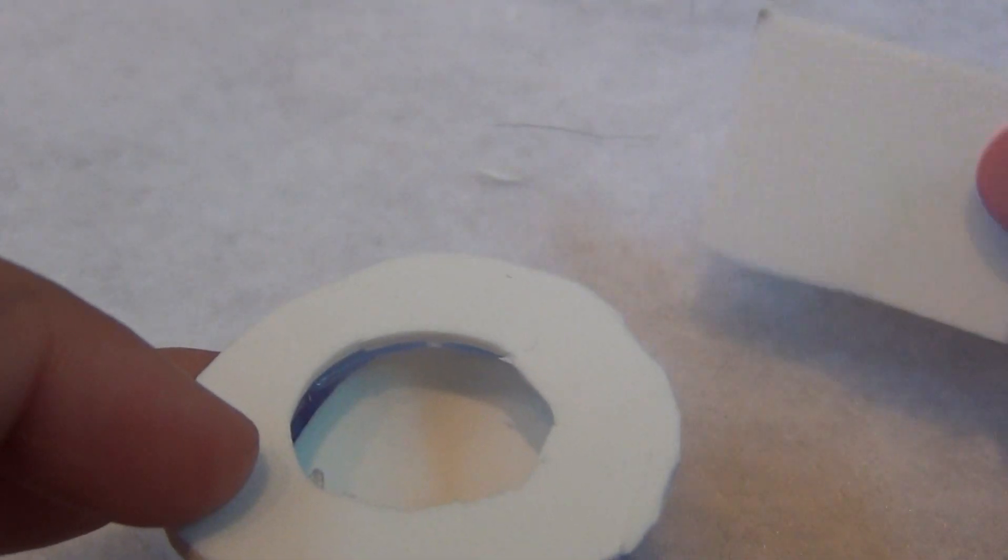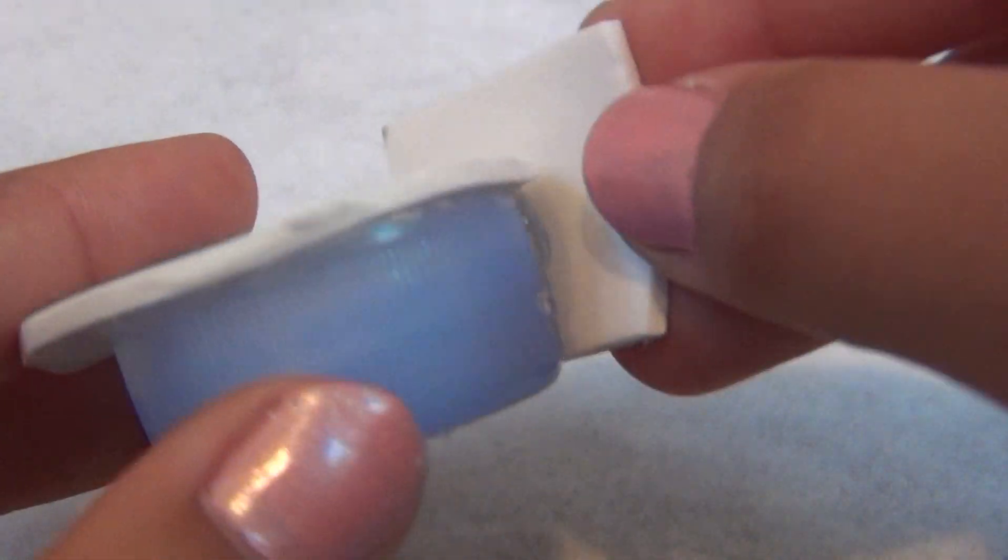Trim the back of your toilet seat off where you will be gluing the back of your toilet. Now, glue the back of your toilet to the back of your toilet.